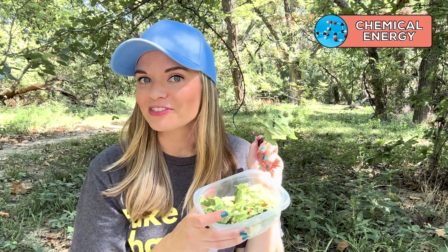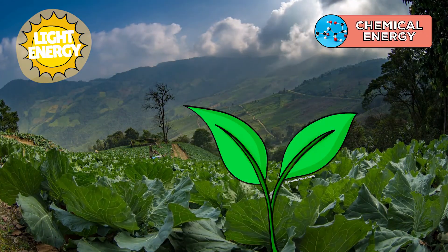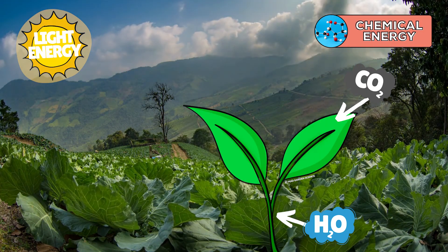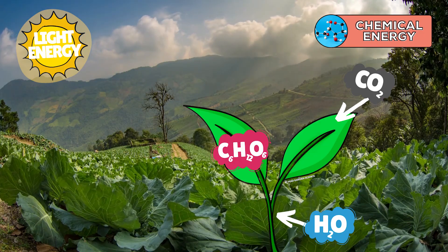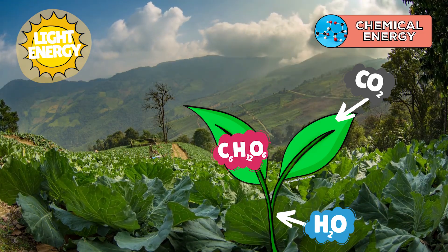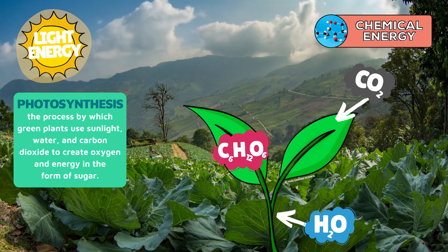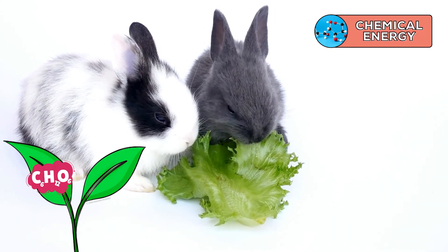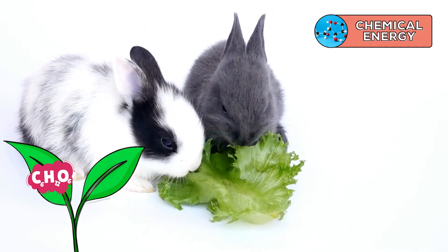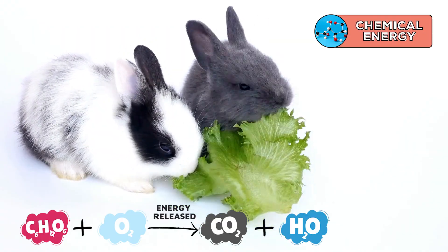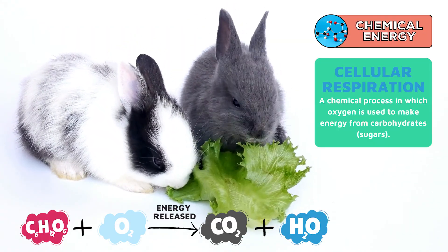Chemical energy is stored in this salad I'm having for lunch. Plants use radiant energy from the sun and convert and store that energy in the chemical bonds within those sugars created through photosynthesis. When sugar stored in the biomass of that plant is eaten by an animal and digested, those chemical bonds are broken by the cellular respiration reaction, converting chemical energy into thermal or mechanical energy.